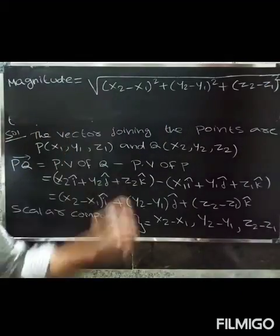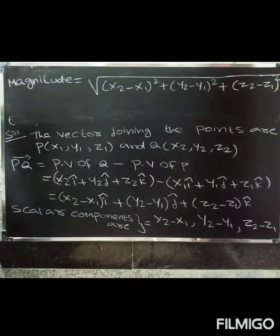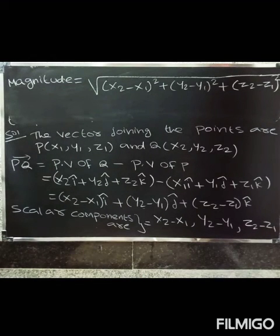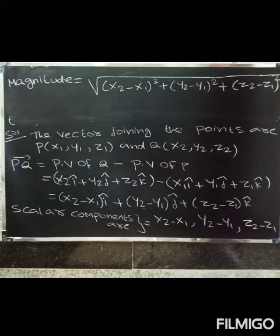So these are the scalar components and the magnitude of the vector joining the two points. Thank you.